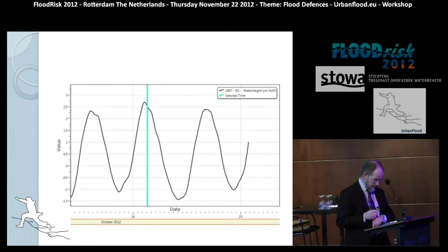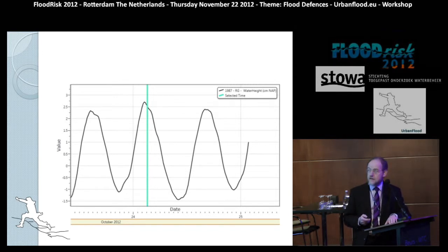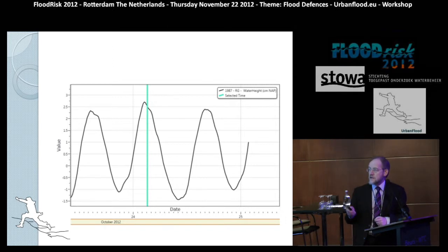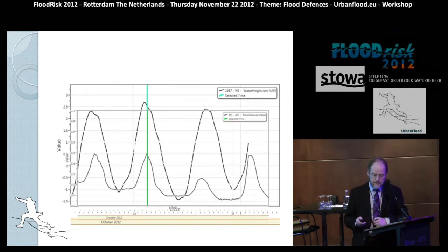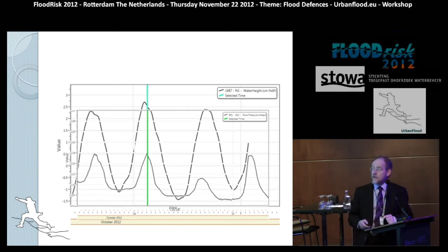Let's talk about what we actually measured. This is the water level recording picked up from the Environment Agency sensors — we were linking all our instrumentation back to their nearby monitoring station. Here is the water level gauge recording at the nearby Grand Sluice. I'm now going to superimpose the pore water pressure recording, and you can see it responds in a similar way to the tidal signal but with a slight time difference in when the peak arises. This particular sensor is located in the slope of the embankment, fairly close to the water surface.